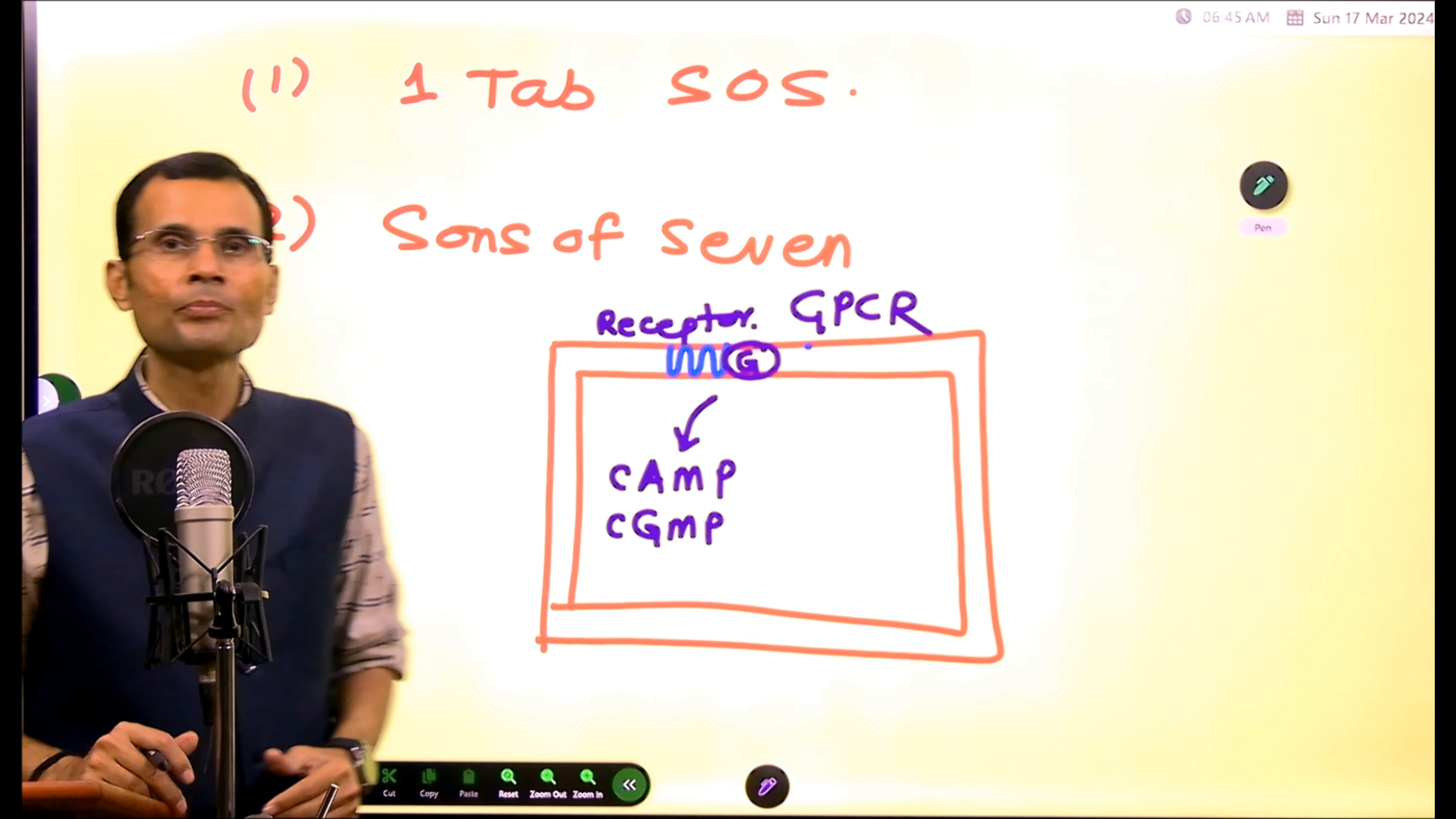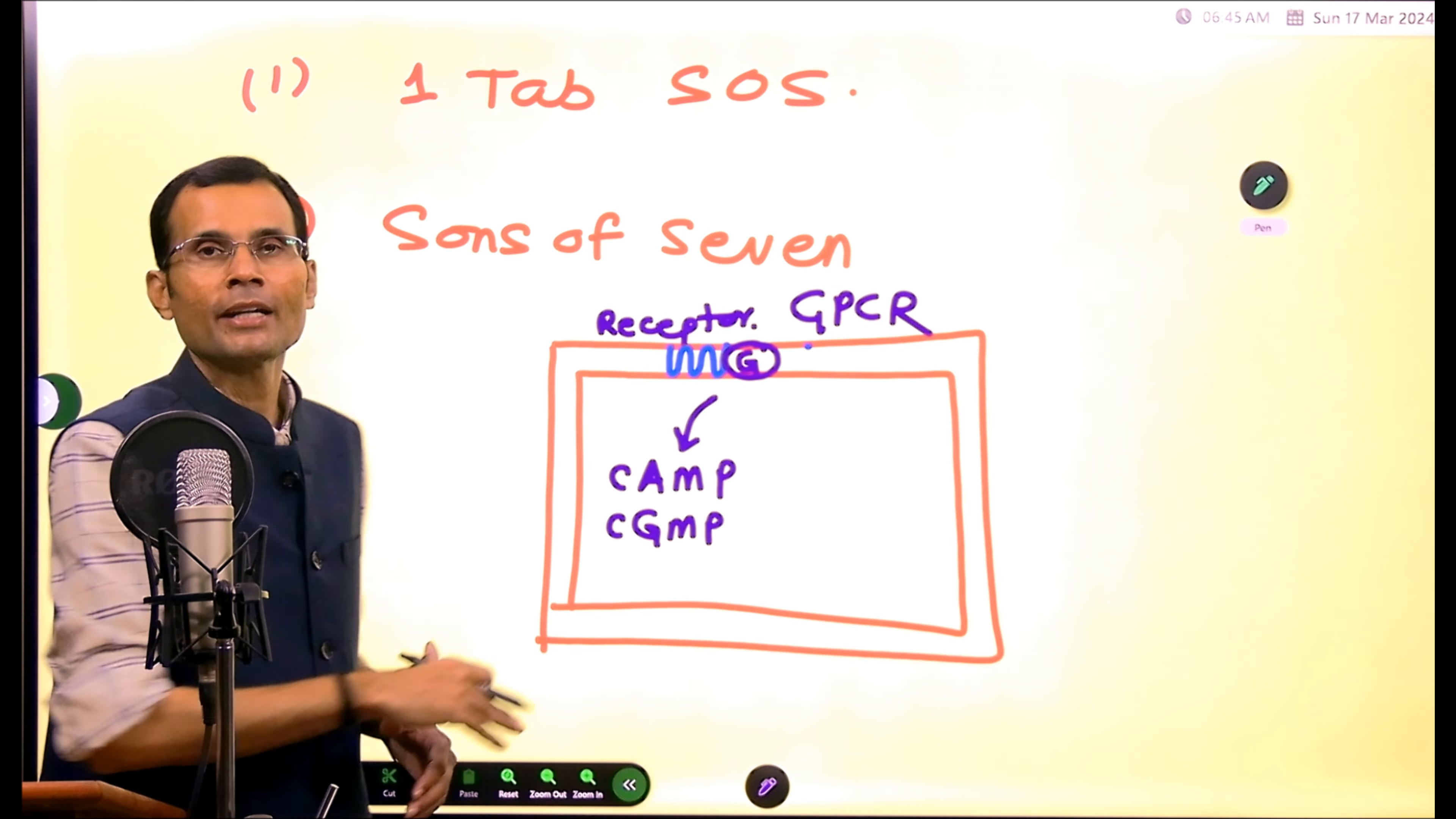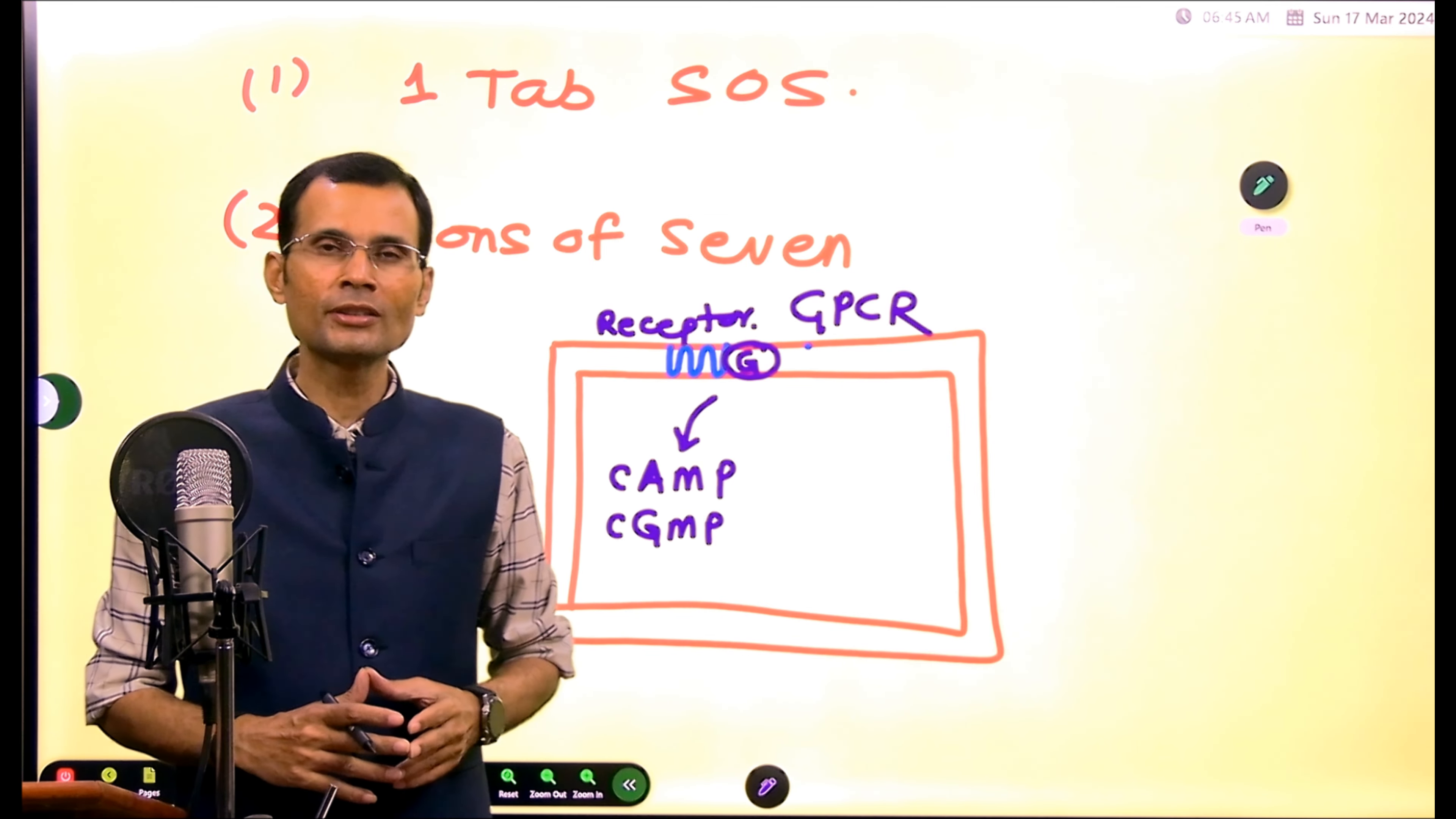There's another meaning and that is 'sons of seven.' What does that mean? What is this seven business? Look, many hormones have their receptors in the cell membrane of the target cell. Those receptors are called G protein-coupled receptors because those receptors are coupled with the G protein in the membrane. What is so special about this receptor? That's the point.